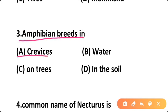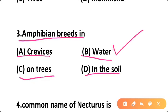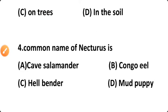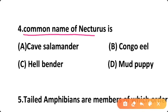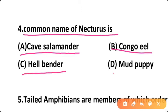Question three: Amphibians breed in — Option A: crevices, Option B: water, Option C: on trees, Option D: in soil. Correct answer is Option B — amphibians need water for their breeding. Question four: The common name of Necturus is — Option A: cave salamander, Option B: Congo eel, Option C: hellbender, Option D: mud puppy. Correct answer is Option D — mud puppy is the common name of Necturus, which belongs to genus Necturus.